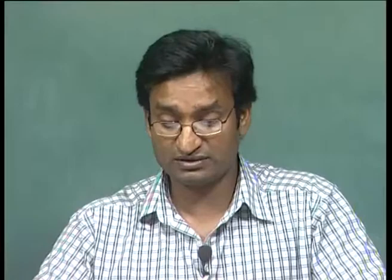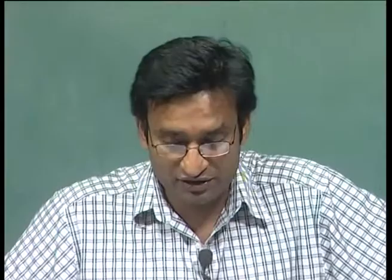This is a very important structure because many engineering materials like iron oxide Fe3O4, nickel iron oxide, cobalt iron oxide, and many magnetic materials follow this structure. In this structure, since you have FCC packing and two different kinds of cations, both cations cannot occupy the same interstitial site. The radius ratio predicts that one goes to tetrahedral and another goes to octahedral coordination.